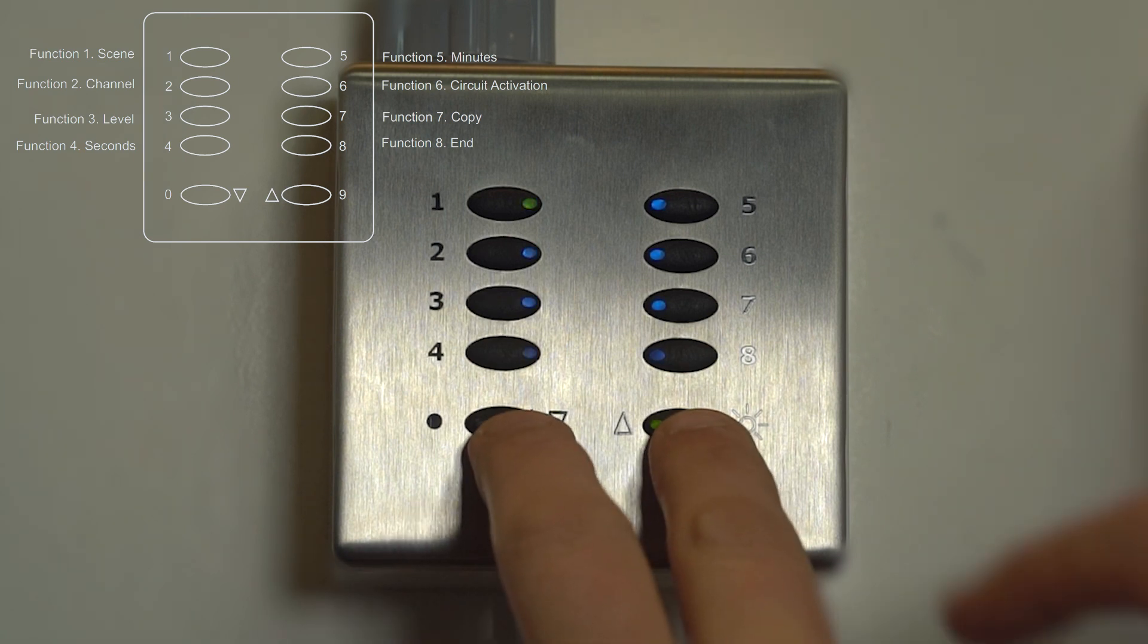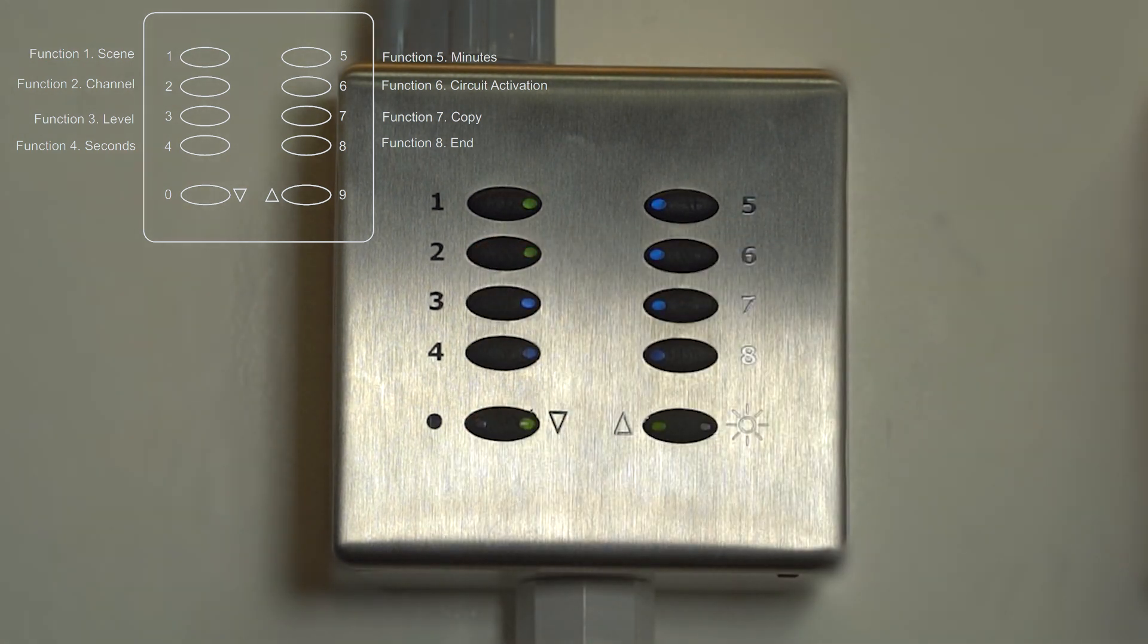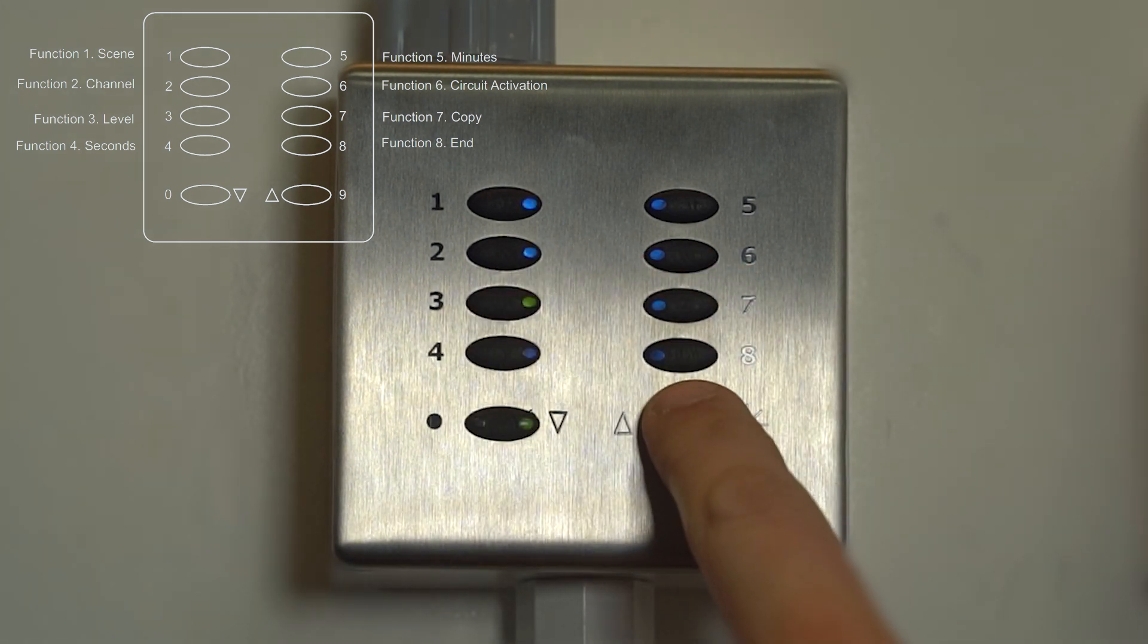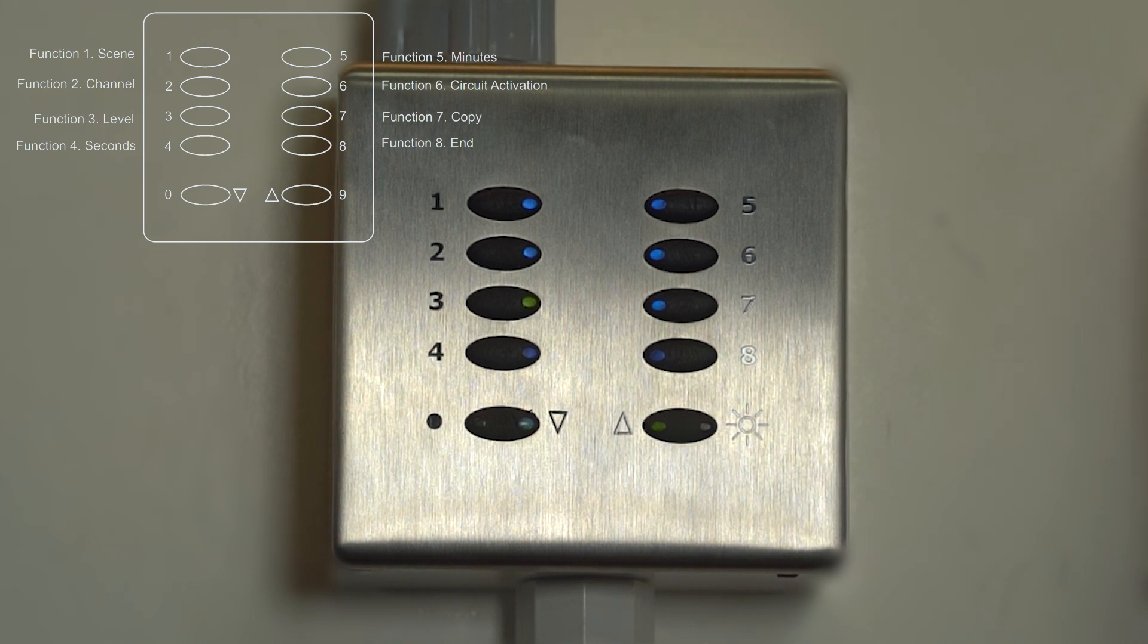To do this, you press and hold the bottom two buttons, and then number 2, bringing you back to selecting the channel you wish to edit. Then, choose another channel, and then press and hold the bottom two buttons, and number 3, to also then change the level for this new circuit. Repeat for as many channels as you need to, to get the levels as desired.